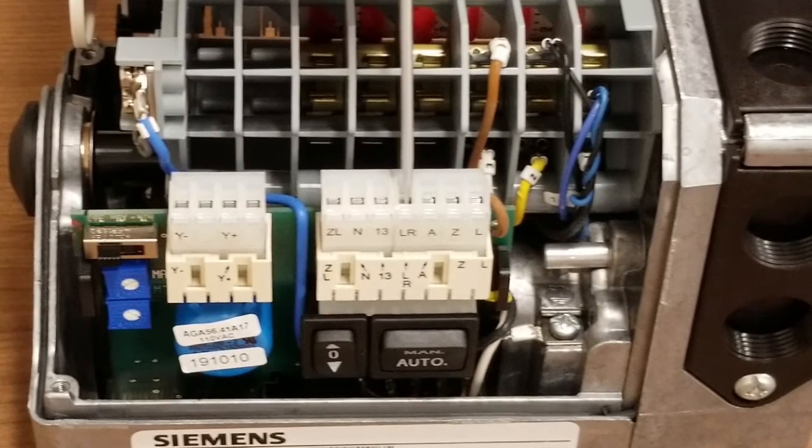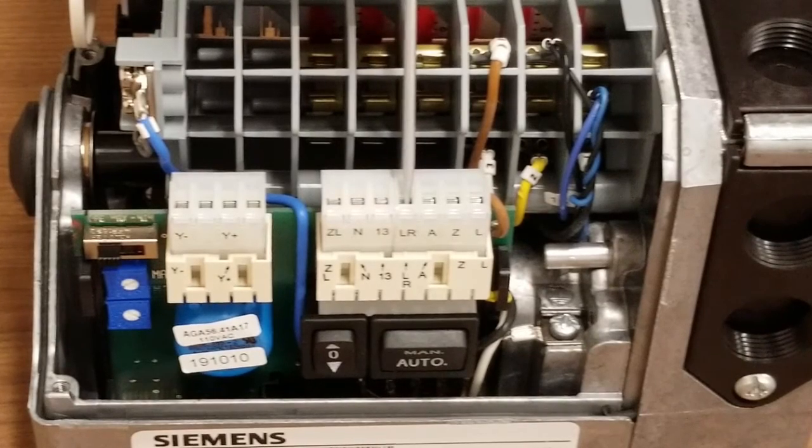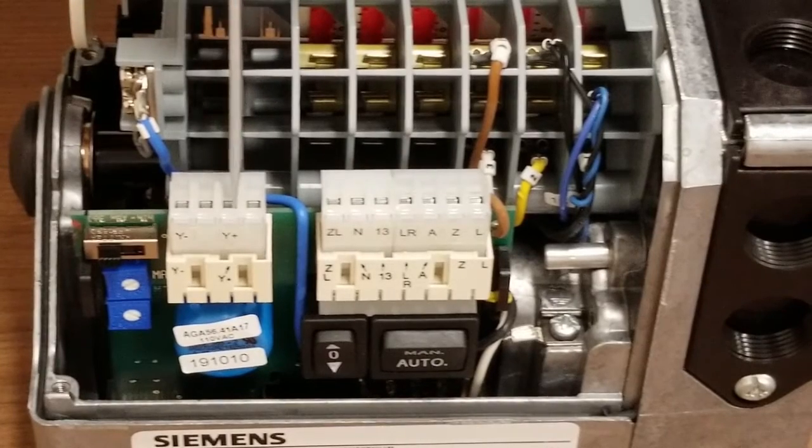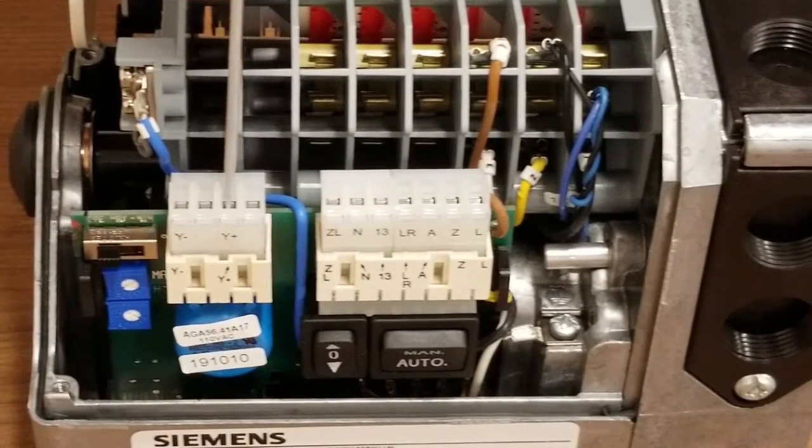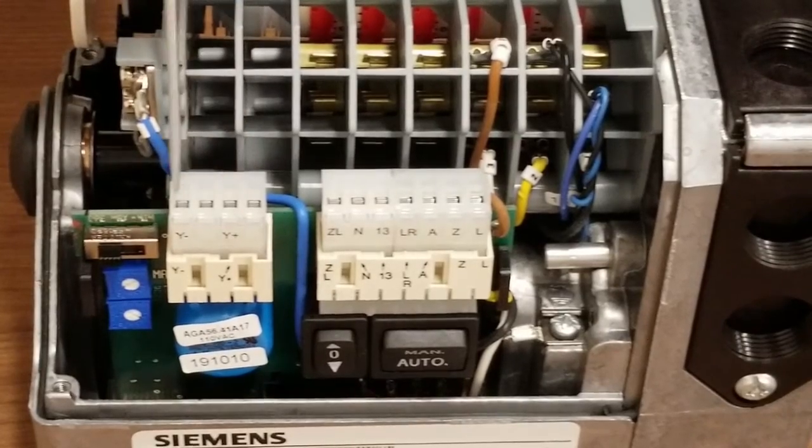Since we're using an actuator with a G board for our demonstration, the input signal will be 4 to 20 milliamps. The positive end of this input signal will be wired into terminal Y plus, right here. And the negative end of that input signal will be wired into the Y minus terminal.